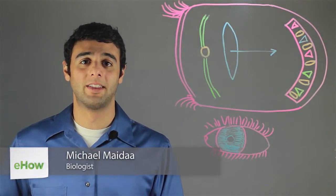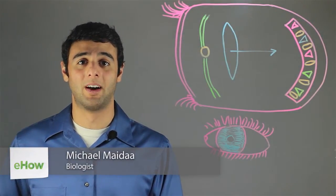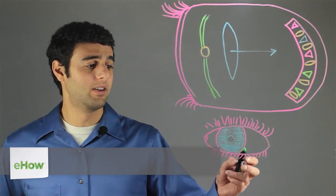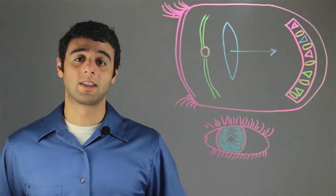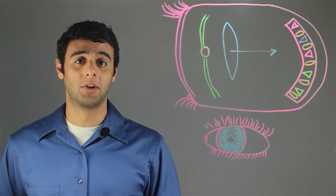Hi, I'm Michael Mehta and this is the anatomy of the human eye. Here we have a blue eye as we see it, and I will be discussing the anatomy of the human eye.